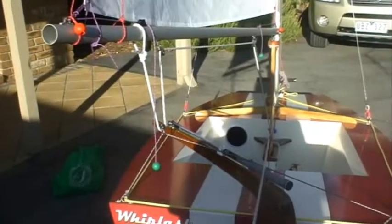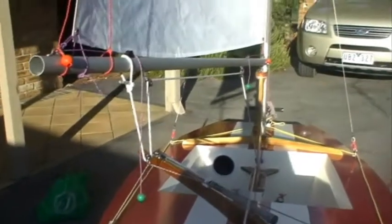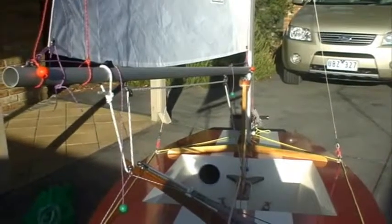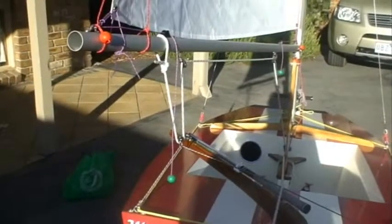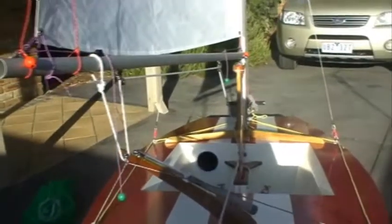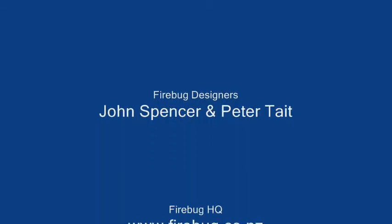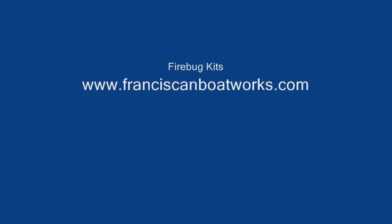Obviously the tighter you have your bridle, the more your block is going to move to the outward side of the boat. The looser you have your bridle, the more the block's going to be to the inside of the boat. The more the block's to the outside of the boat, the more pull down it's going to have for the pull in. The more it's going to be to the middle of the boat, the more pull in it's going to have compared to the pull down.